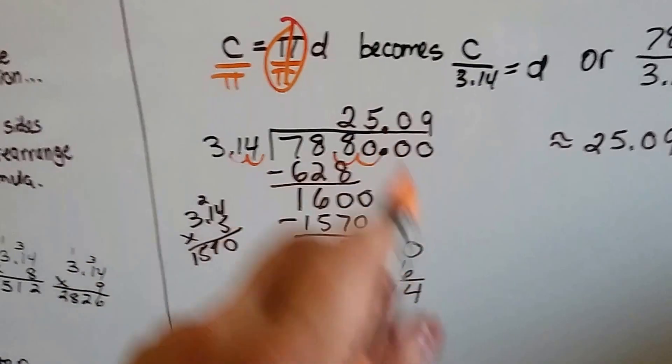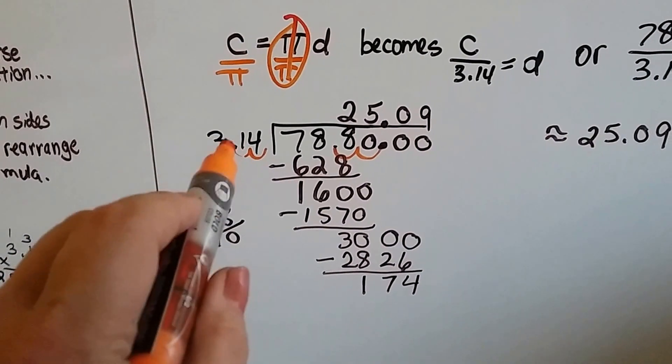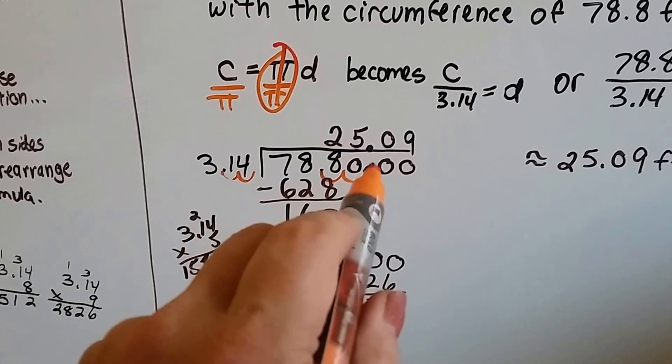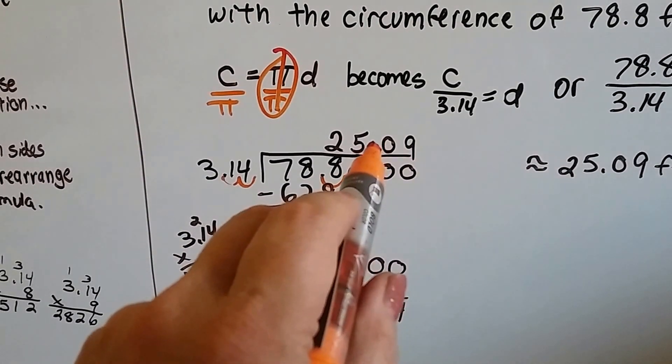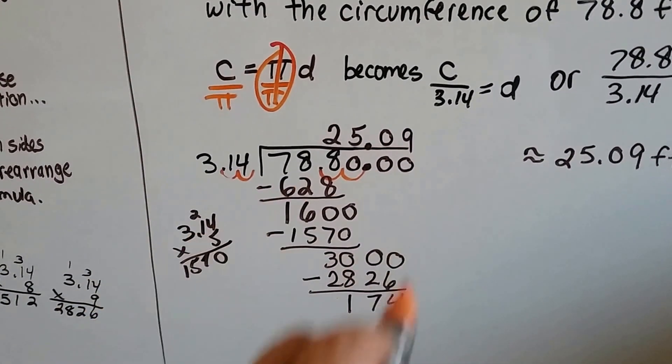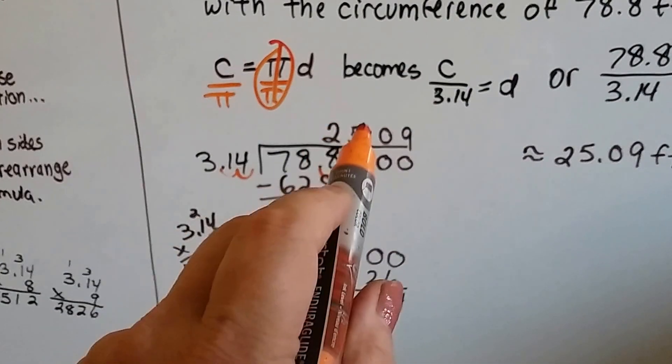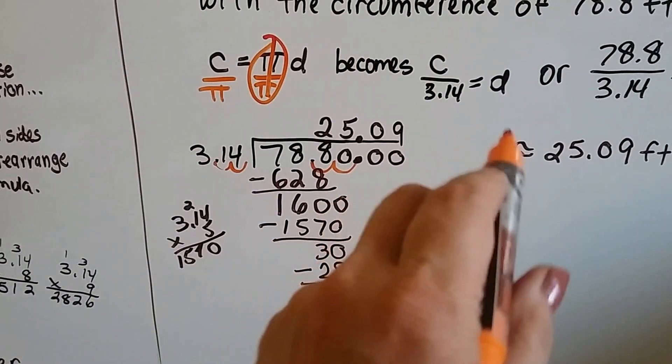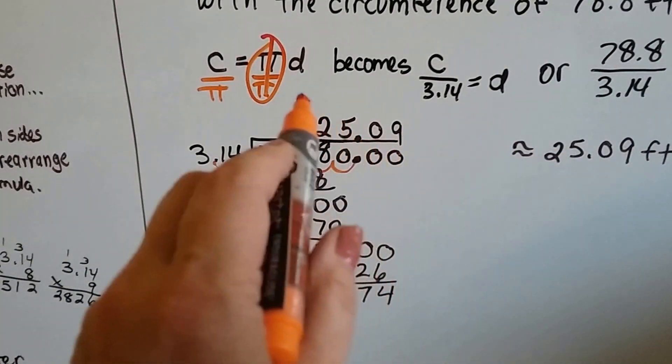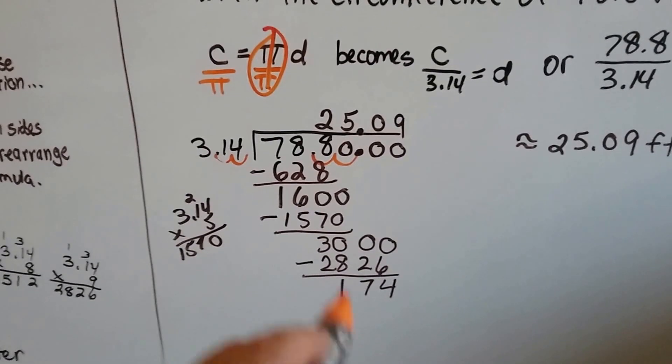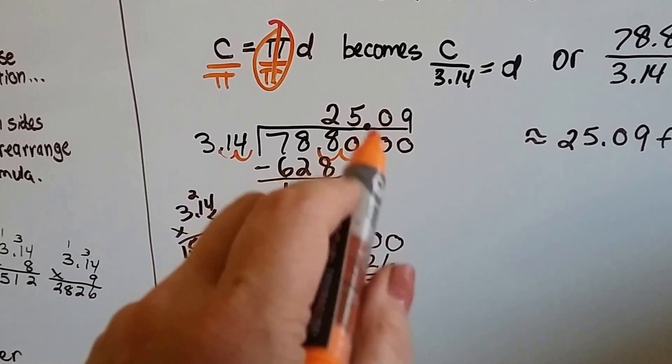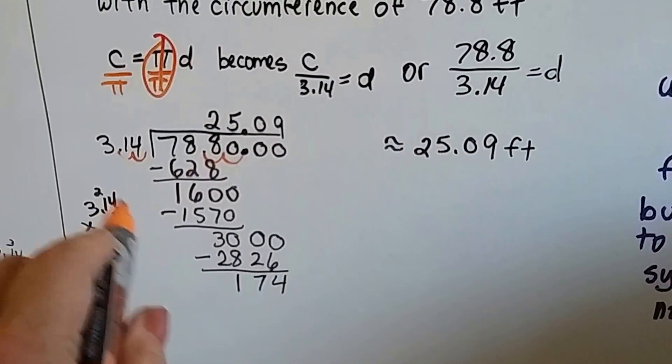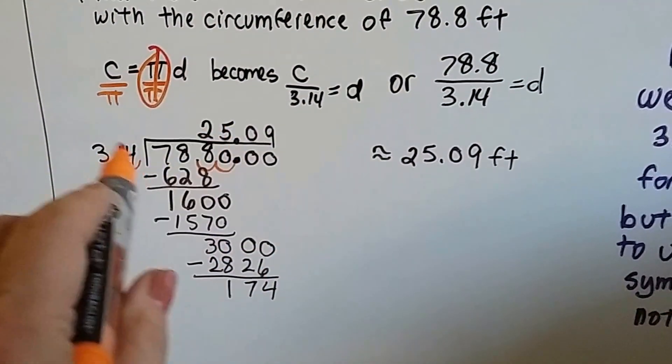So we do our long division. And 3.14 gets its decimal point moved over behind the 4. So the 78.8 gets its decimal place moved over. We put it up on top where it belongs. We do all the long division. And I come up with 25.09. Now, it wasn't finished. But I didn't want to keep going on and on. And we're using approximates anyway. So it's approximately 25.09 feet. That's our answer. I did a little multiplication on the side to help me figure out the division.